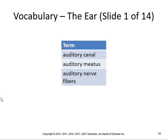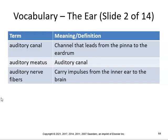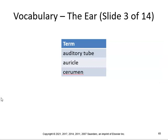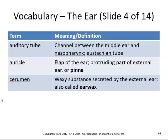The auditory canal is the channel that leads from the pinna to the eardrum. The auditory meatus is the auditory canal. Auditory nerve fibers carry impulses from the inner ear to the brain. The auditory tube (Eustachian tube) is the channel between the middle ear and the nasopharynx — kids get a lot of ear infections because their auditory tube is shorter; as we get older it becomes more angular and longer, so adults have fewer infections. The cerumen is earwax — a waxy substance created by the external ear to keep the ear canal safe and trap foreign particles and insects.